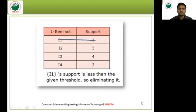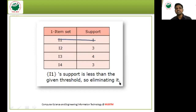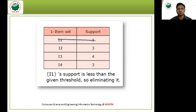Now applying the threshold: the minimum support threshold is 2. The support of I1 is 1, which is less than the threshold of 2, so we eliminate I1. The remaining frequent items are I2 with support 3, I3 with support 4, and I4 with support 3.